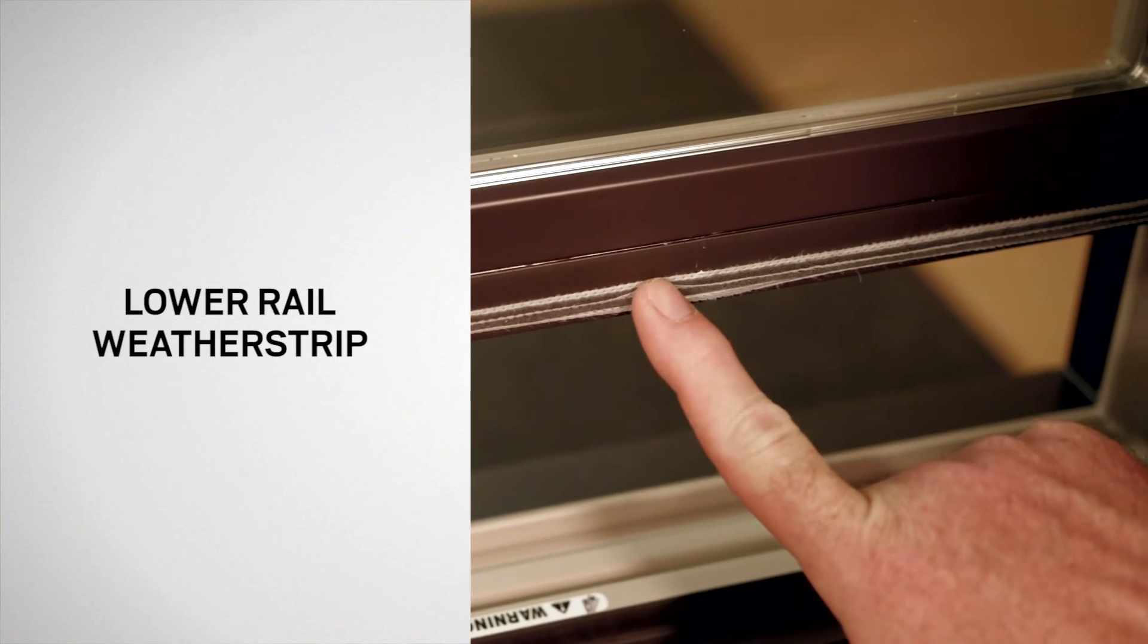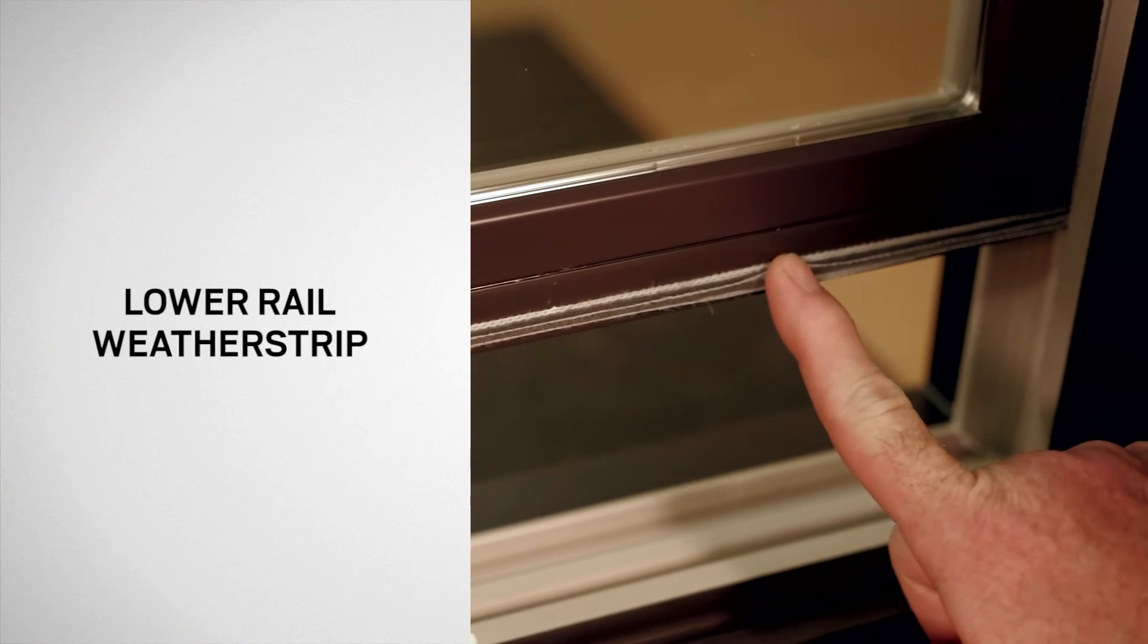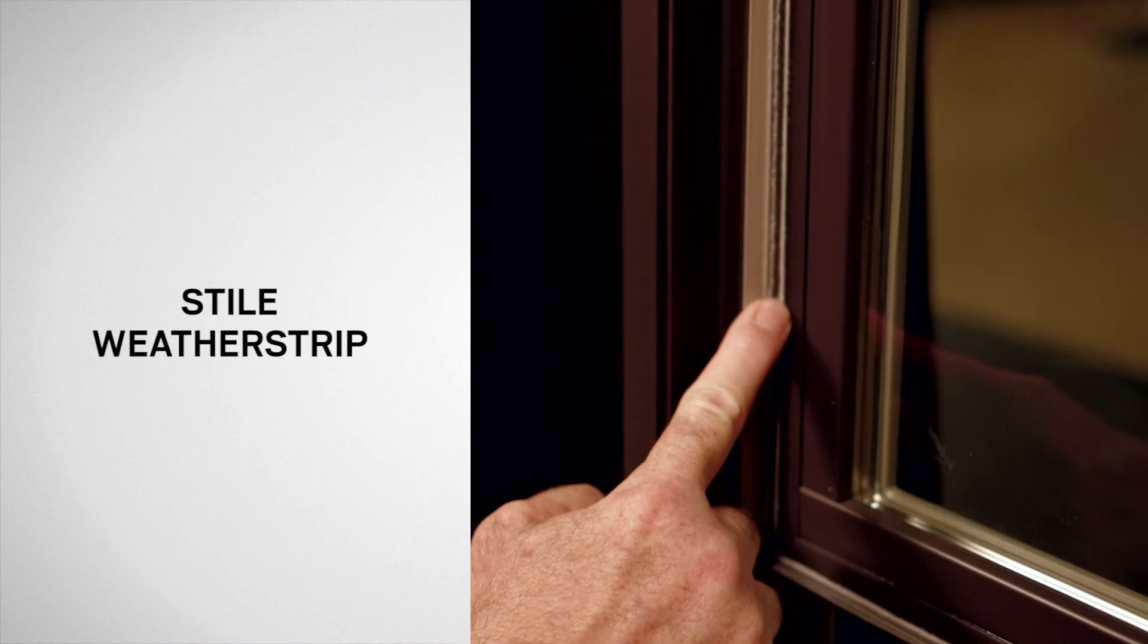The lower rail weatherstrip is also designed to seal the sash to the frame. Here you can see the style weatherstrip.